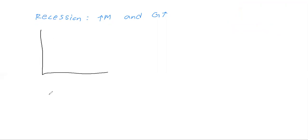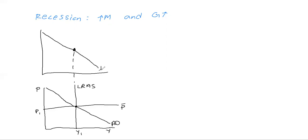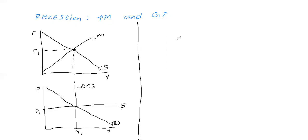Let's take this piece by piece. First we're going to draw out our IS-LM and AS-AD model. We have the long run and the short run aggregate supply, our aggregate demand, our short run aggregate supply labeled P-bar, and our long run aggregate supply. All these will match in the middle at one common equilibrium at Y1. Our equilibrium in the IS-LM model will be right at that black dot.